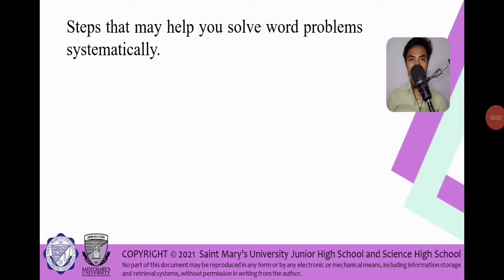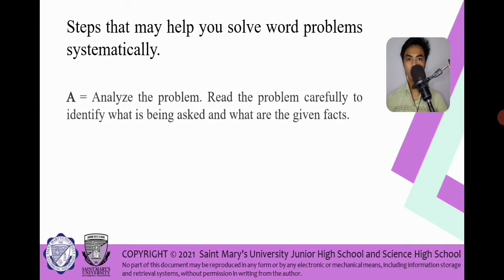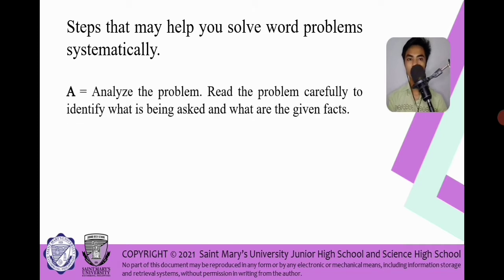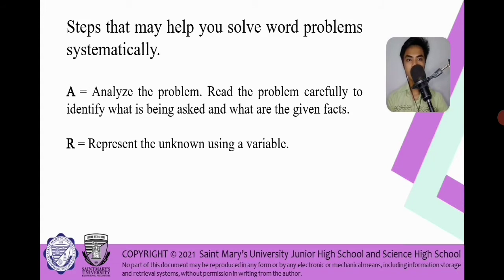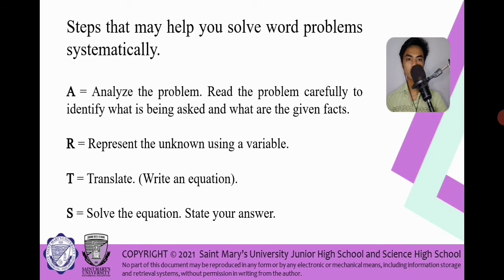There are also steps that may help us in solving word problems systematically. We have the acronym ARTS: A stands for analyze the problem — read the problem carefully to identify what is being asked and what are the given facts. R stands for represent the unknown using a variable. T stands for translate or write an equation. And S stands for solve the equation or state your final answer. We need to follow these steps in order to solve word problems systematically.